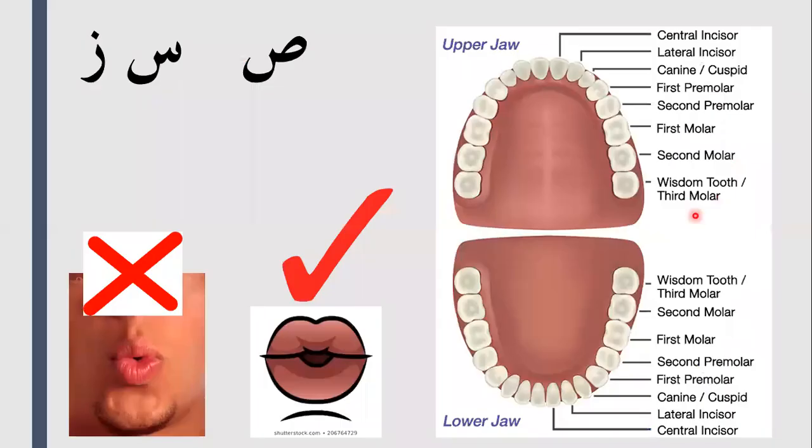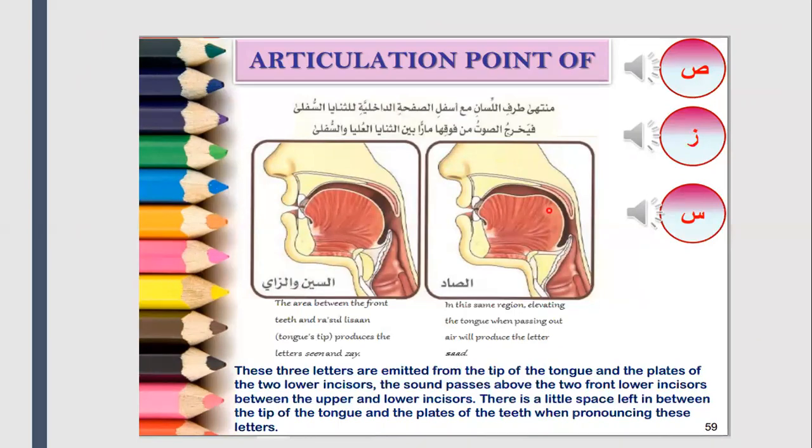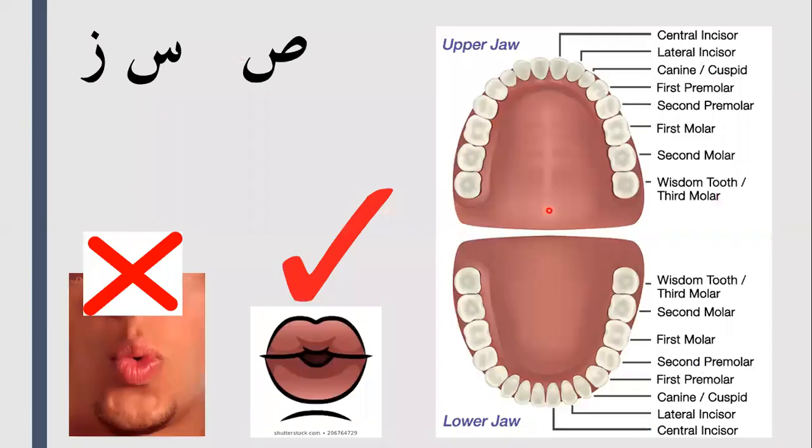And if you just keep your lips like this on the sawd and raise the back of your tongue and ensure that your tongue, tip of your tongue is touching this part, inshallah that will make sure that your sawd is heavy. For the seen, make sure that you are touching the meeting point of the gum line and the teeth.